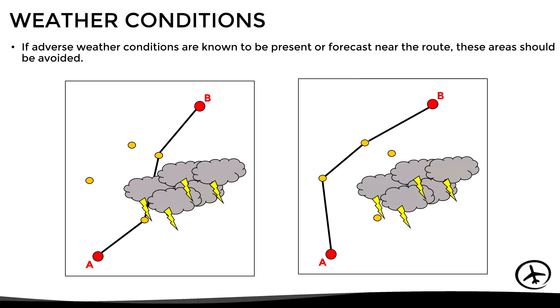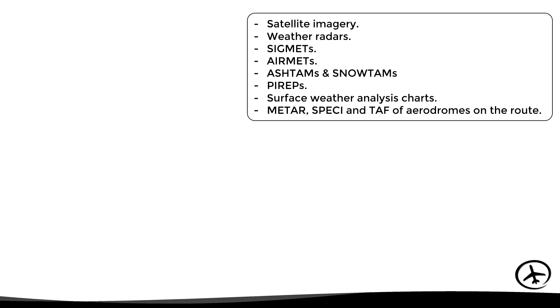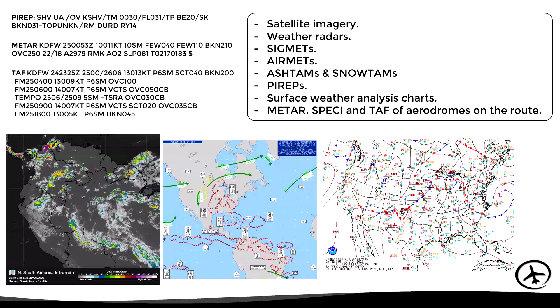If adverse weather conditions are known to be present or forecast near the route, these areas should be avoided during flight planning. Sometimes this implies choosing a much longer route or even canceling the flight. These decisions should be based on the analysis of satellite imagery, weather radars on the ground, SIGMETs, AIRMETs, ASHTAMs, SNOWTAMs, PIREPs, surface analysis charts, as well as weather reports and forecasts of airports close to the route.